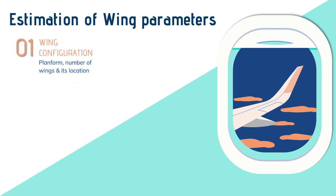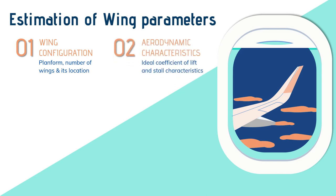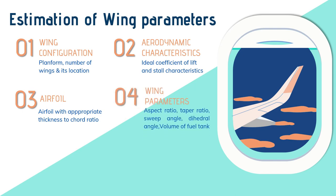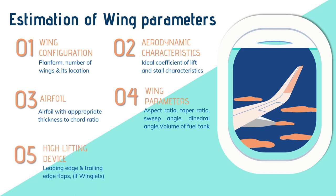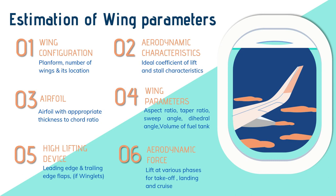The module starts with selection of wing configuration — platform, number of wings, and location — then estimation of the aerodynamic coefficient of an airfoil, which will satisfy the airfoil width and thickness-to-chord ratio. This is followed by wing parameters like aspect ratio, wing area, span, taper ratio, mean aerodynamic chord, sweep angle, twist angle, incident angle, and dihedral angle to satisfy the fuel tank volume. You will also learn about high-lift devices and their application.